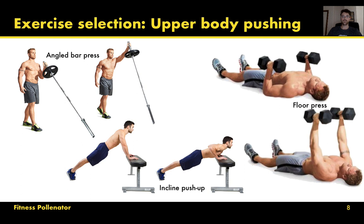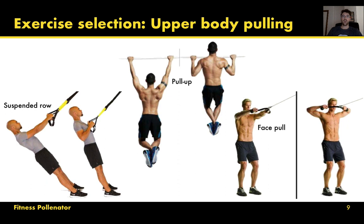The first movement pattern is the upper body push — anything where you are pushing weight away from your body, or in a bodyweight exercise where your hands are fixed, pushing your body away from the attachment point. These exercises target the chest, triceps, and delts. Next are upper body pulling exercises, where you're pulling your body towards a fixed attachment point or pulling weight towards your body. These primarily hit the back, biceps, rhomboids, and mid traps.